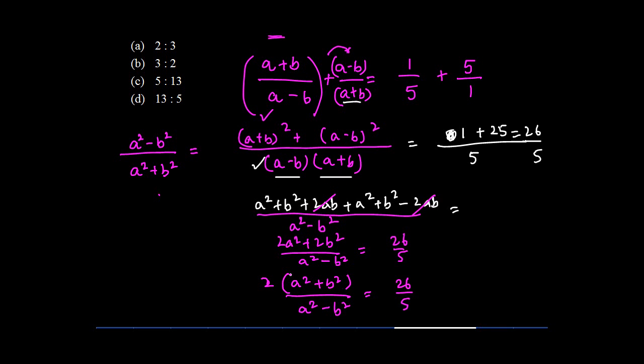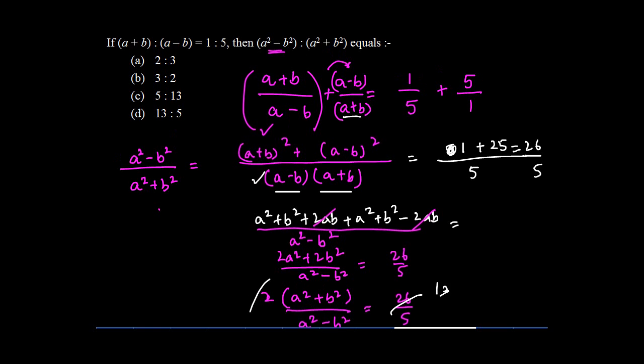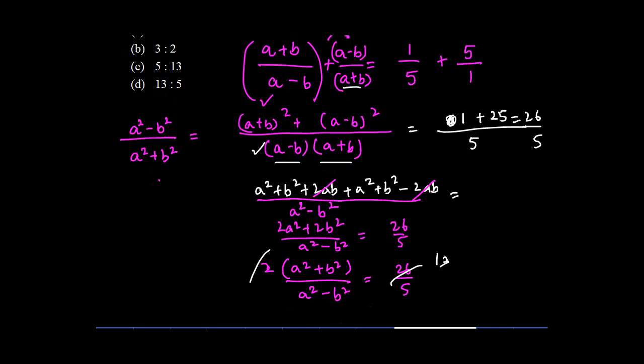Now I can cancel the 2 with 26 to give me 13. But what did I require? I required (a²-b²) is to (a²+b²). Here I have the reverse, so I can just reciprocate them.